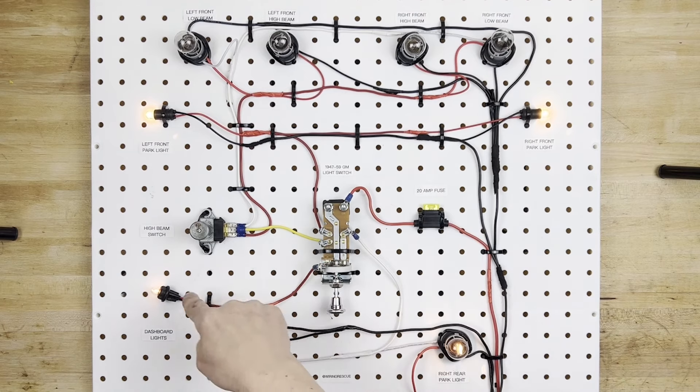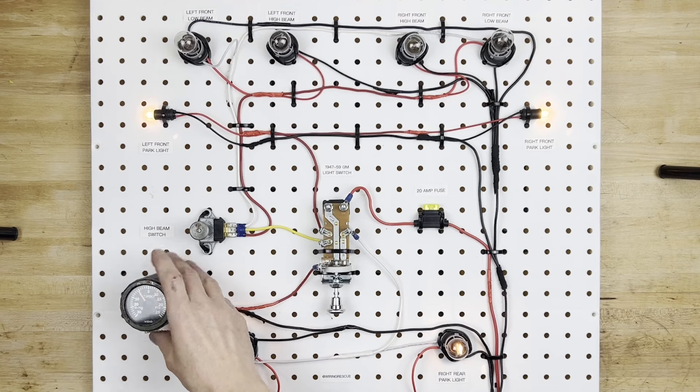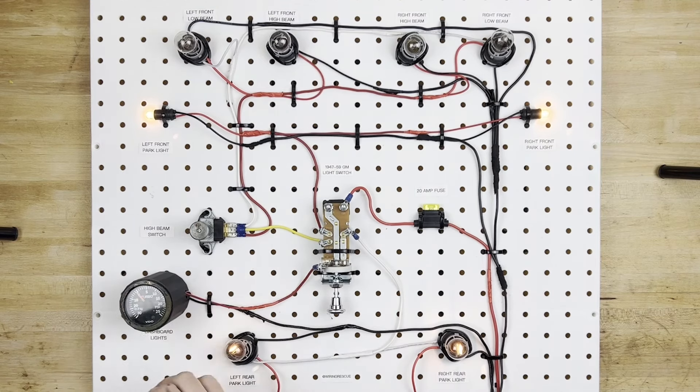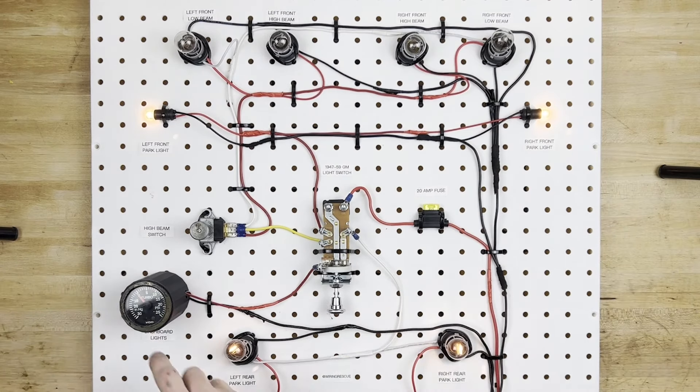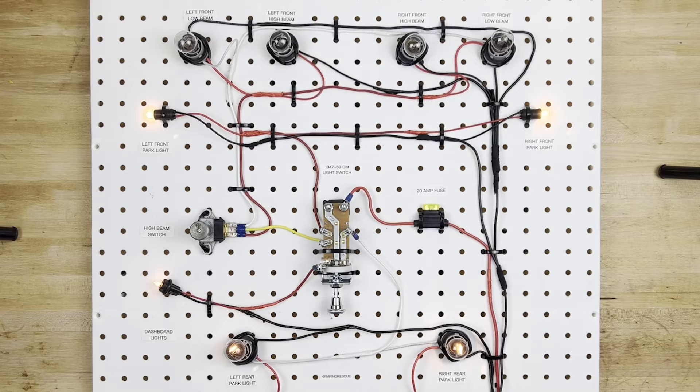Now right here we have a terminal labeled dash, and that is where the power comes out and goes to your dashboard lights. Now normally the dashboard lights would have gauges, right? I was actually hoping to show it in the form of a gauge, but it turns out with all the light facing this board, it's really hard to see the light in the gauge. So I just pulled the bulb out of the gauge, and now you have this instead.